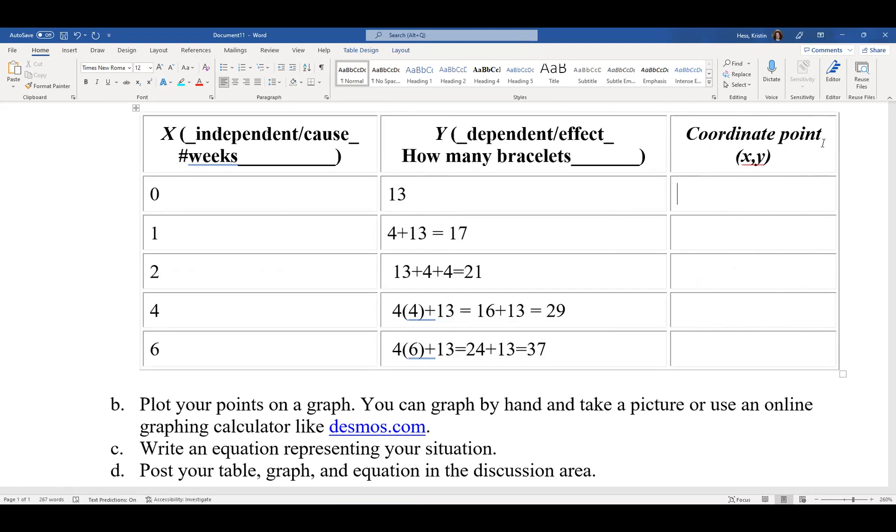So I'm going to change each of these points into a coordinate point. So this zero, this is our x. And the next one, we have (1, 17). Next is (2, 21). The next is (4, 29). And the last is (6, 37). Let me double-check: our x's went 0, 1, 2, 4, 6, and we have 13, 17, 21, 29, and 37 for our y values.